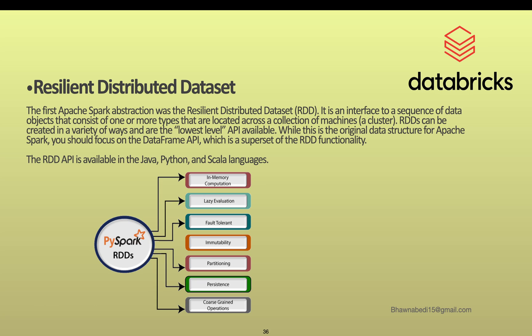When we talk about RDDs, we already know that Spark is an in-memory computation with lazy evaluation. RDDs are fault tolerant and immutable in nature. Remember that in every programming language, whatever data structure you use — like a list, tuple, or dictionary in Python — it has certain features. Similarly, RDDs also have their own features.